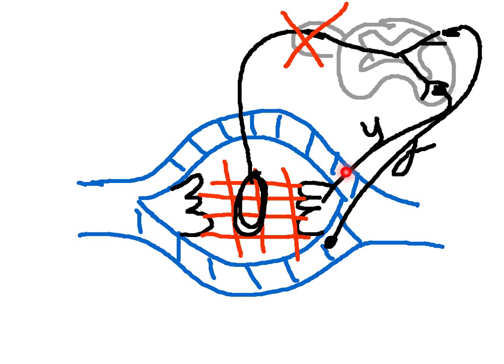If you stimulate only the gamma, it causes contraction of the intrafusal fibers, which pulls on the muscle spindle, but it does not cause whole muscle contraction without the reflex. If the reflex were intact and you stimulated the gamma — pulling the muscle spindle, increasing firing, and synapsing onto both motor neurons — you would get contraction. But with only gamma stimulation, the reflex is required, because the intrafusal fibers are too few and too small to cause whole muscle contraction on their own.